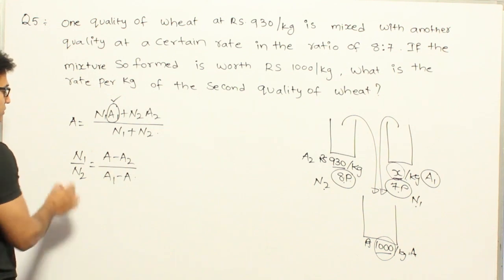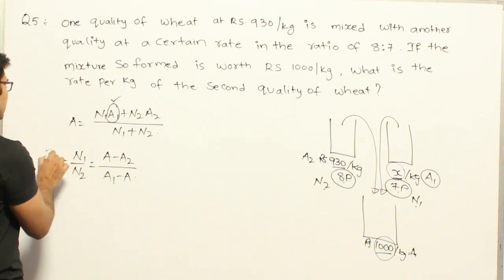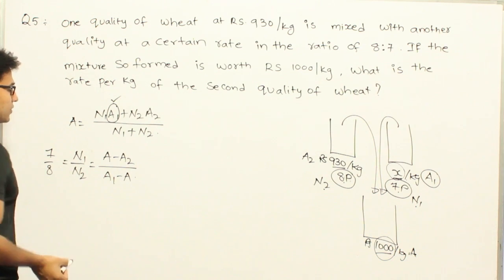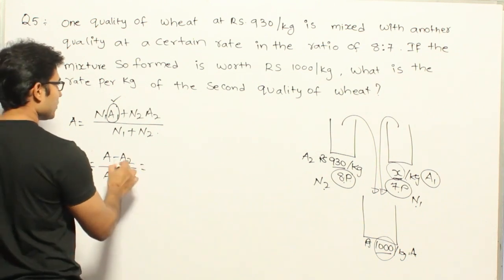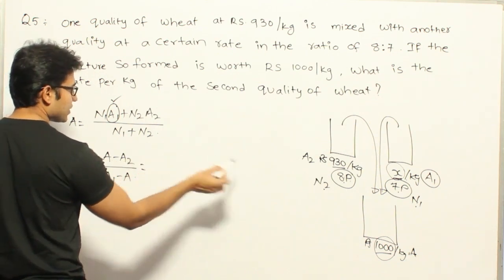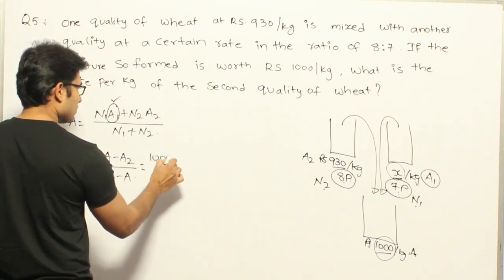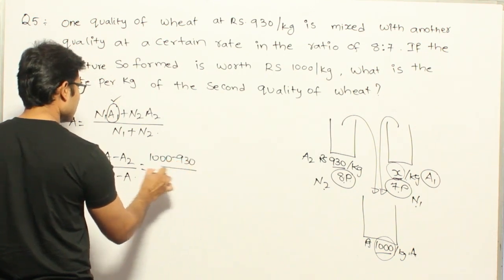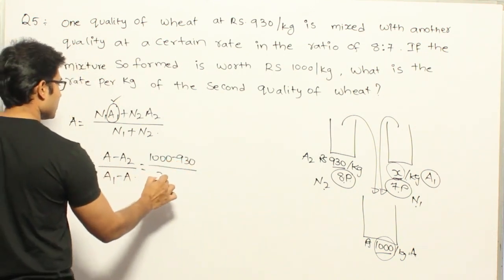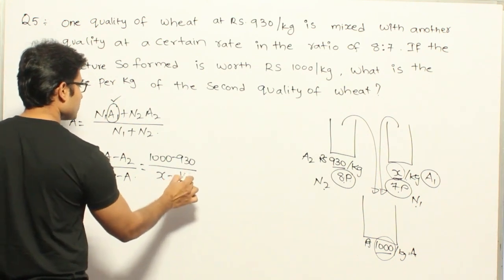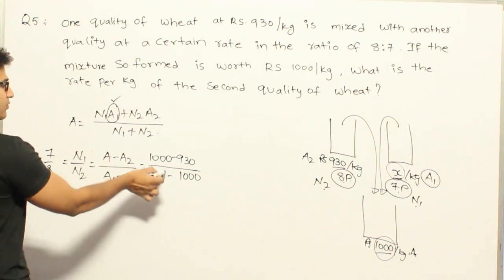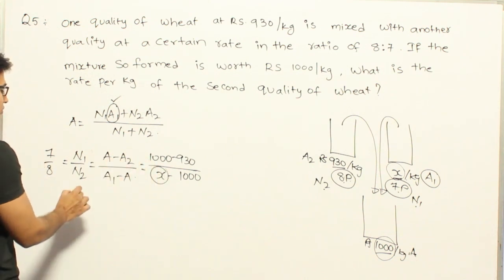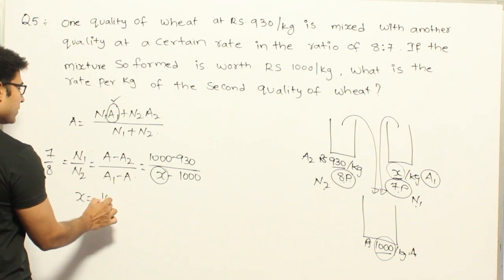And N1 is to N2 is 7 is to 8, so now you can equate it to 7 by 8. If you want to see, you can equate it by 7 by 8. And now this one is going to be A minus A2. So what is A? 1000 minus A2 is 930, right? So 1000 minus 930 divided by A1 is what we have to find out, so X minus 1000. Got it? So you can write like this, just cross multiply and find out the value of X. So if you find out the value of X, you are going to get X equal to 1080 rupees per kg.